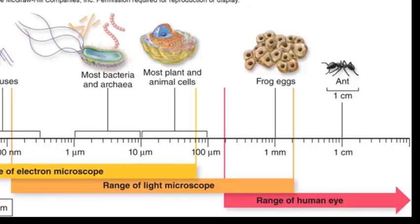This scale shows the range of magnification for different types of microscopes. So you can see that the range of the human eye, you can't really see anything below zero millimeters in size. Below that you need to start using a light microscope. And the range of a light microscope can magnify things from around about 100 nanometers all the way through to just over a millimeter.